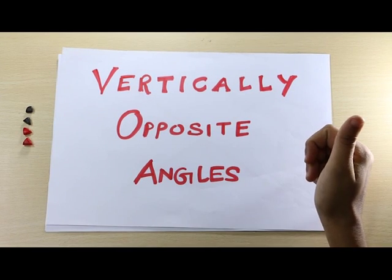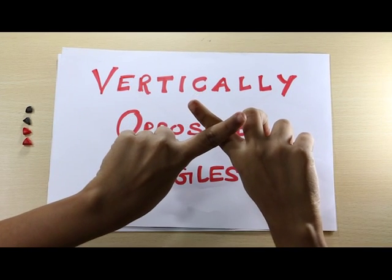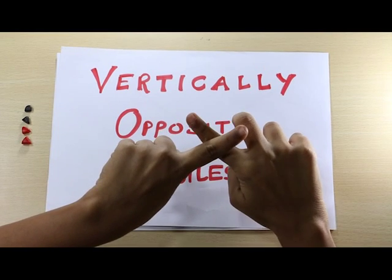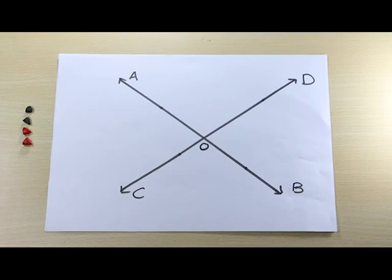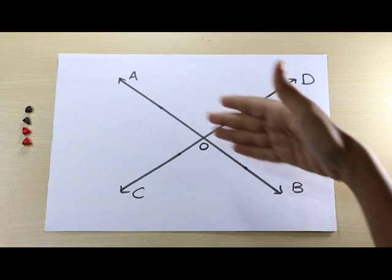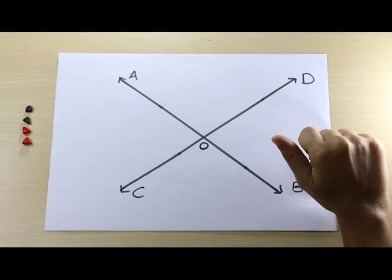Vertically opposite angles are formed when two lines intersect. They also share a common vertex. As you can see in the drawing, line AB and line CD intersect at point O.